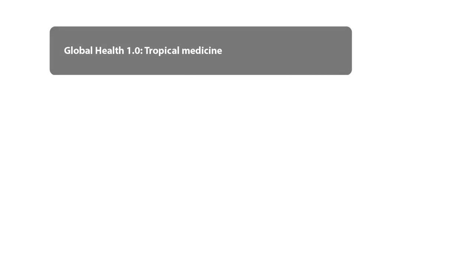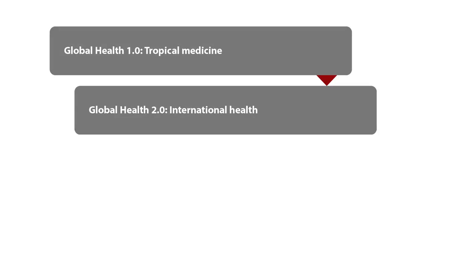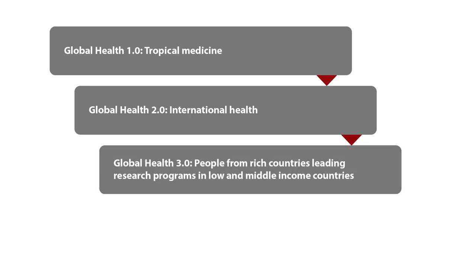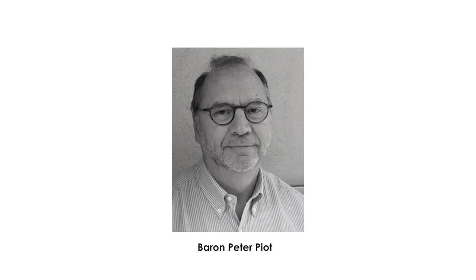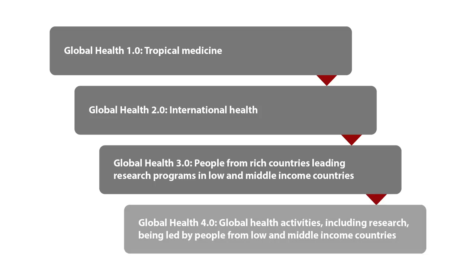We recognize that a shift has taken place over two centuries: from the initial interest in tropical medicine as part of colonization, to international health when high-income countries started looking at the health problems of other countries, to a period of intense collaboration in research and health system strengthening where people from rich countries were leading research programs in low and middle-income countries and setting the agenda. But Baron Peter Piot, director of the London School of Hygiene and Tropical Medicine, says we must now enter a new phase where global health activities, including research, should be led by people from low and middle-income countries.